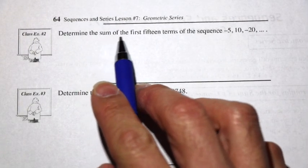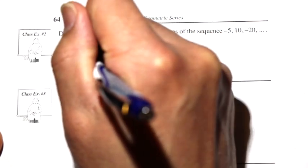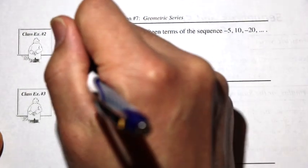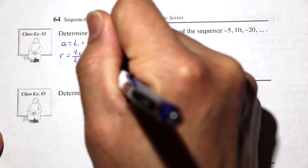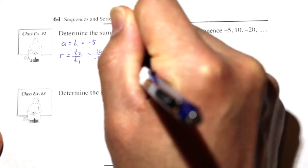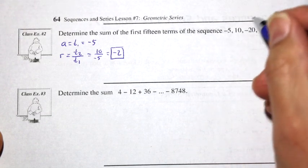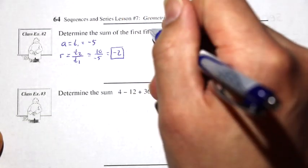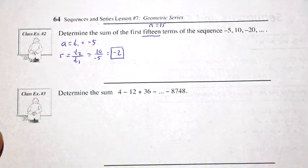Class example 2: find the sum of the first 15 terms of the sequence negative 5, 10, negative 20, and so on. We don't have all the numbers, so we'll use the formula. We can say a, or t1, equals negative 5. We can also calculate r: r equals t2 divided by t1, which is 10 divided by negative 5, giving us negative 2. And negative 2 times 10 is negative 20, so we have a common ratio. It's a geometric sequence. Since there are 15 terms, n equals 15.